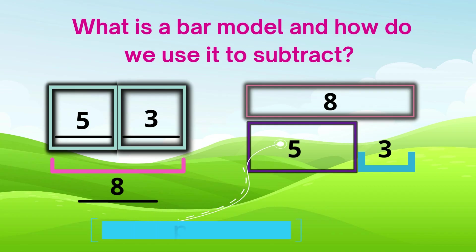And when we subtract from 8, 5, we will get 3. Or if we subtracted 3, we will have 5. So this type of bar model has the whole on top and then two parts on the bottom.